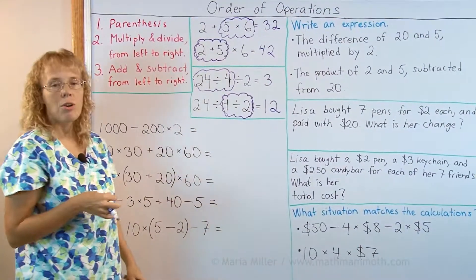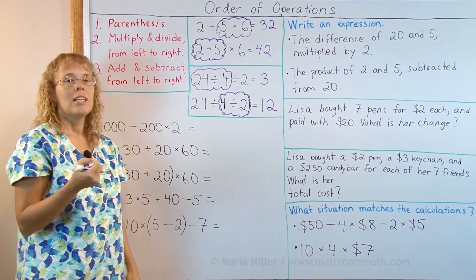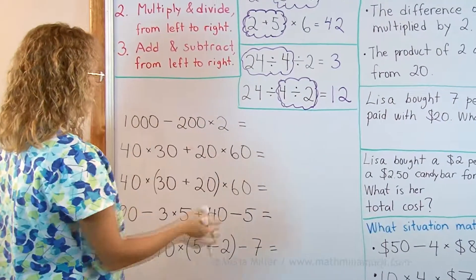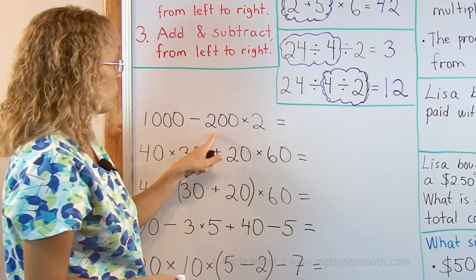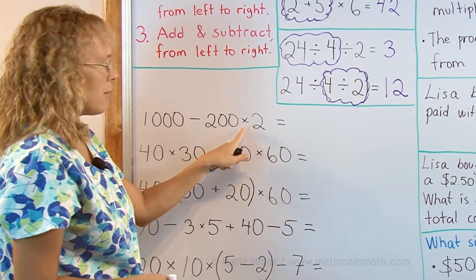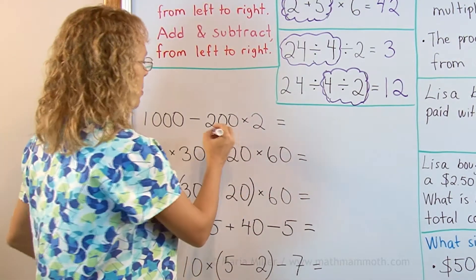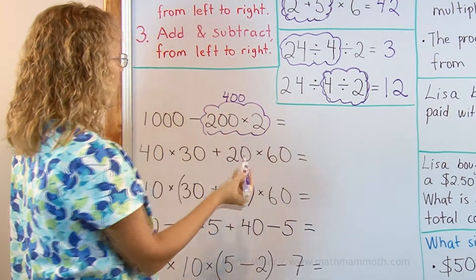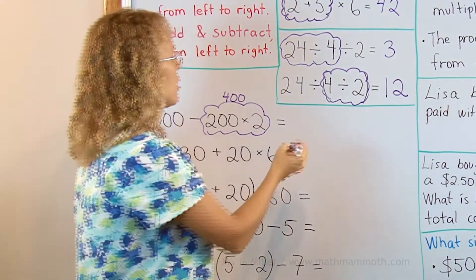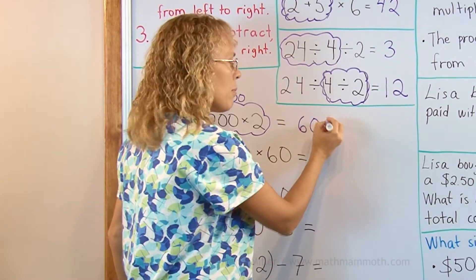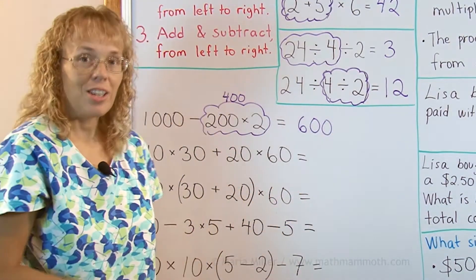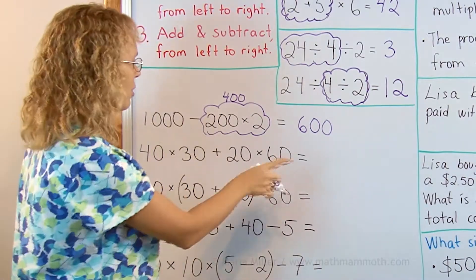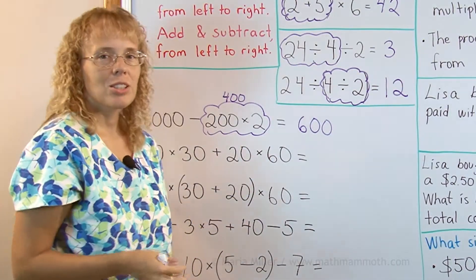In this lesson I want to concentrate especially on multiplication, addition and subtraction. So let's look at these. I have 1000 minus 200 times 2. Again, multiplication is done before subtraction. This first. We have 400 from this one and then 1000 minus 400 is 600. And by the way you can try to solve these ahead of me. You can pause the video for a little bit and try to figure out each one of these before I solve them.